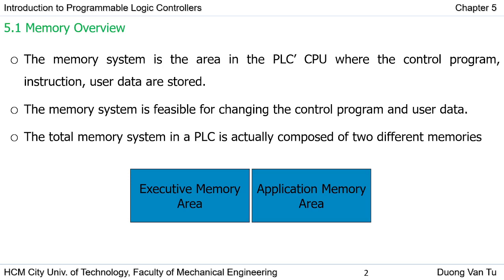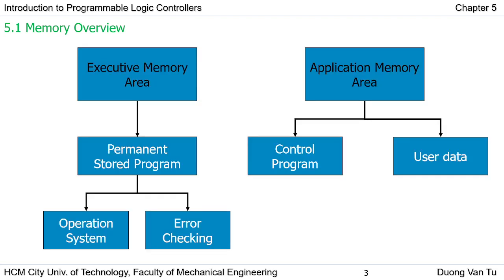In the PLC, the total memory is composed of two different areas: the executive memory area and the application memory area. The executive memory area stores the permanent program. This program is loaded to the PLC by the manufacturer, and it looks like the operating system on a computer or mobile phone.